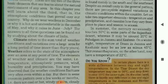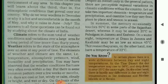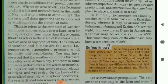In the last two chapters you have read about the landforms and the drainage of our country. These are two of the three basic elements that one learns about the natural environment of any area. In this chapter you will learn about the climate, that is the atmospheric conditions that prevail over our country.